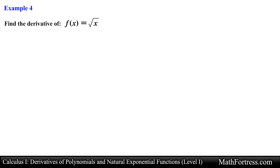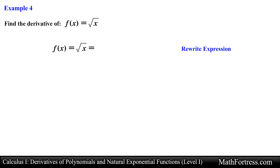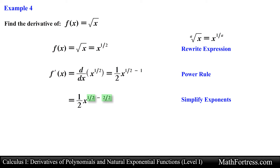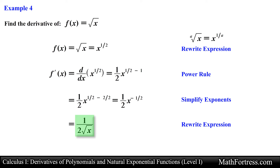Find the derivative of f(x) equals the square root of x. Once again we need to rewrite this into a derivative-friendly form by remembering that radical expressions can be written as fractional powers. So we rewrite it as x raised to the power of one-half, then apply the power rule: bring down one-half and multiply by x raised to the power of one-half minus 1. To subtract the fractions we use a common denominator, and the derivative simplifies to 1 over 2 times the square root of x.